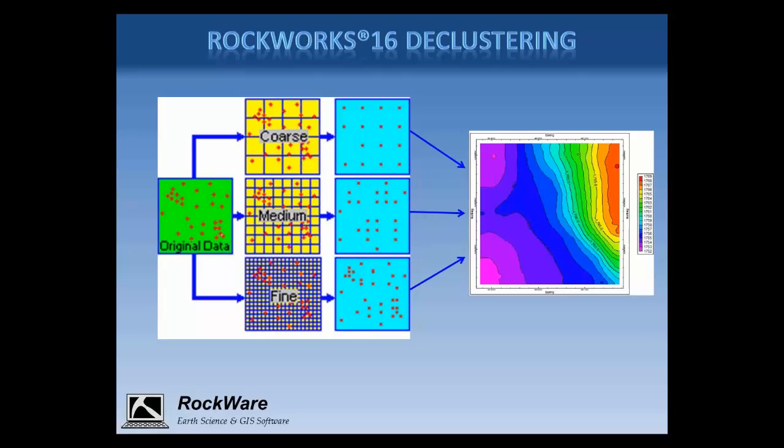The column shaded with a turquoise background represents the averaged values based on the declustering grids, with a red control point in the center of each grid cell. These points are passed on to the modeling algorithm to create the Rockworks grid. If you have a very densely spaced data set — for example, LiDAR data — turning on declustering can drastically speed up the modeling process. It also comes in handy for 3D models based on densely spaced borehole data such as borehole geophysics. Models created with and without declustering are typically very similar, so if you're working with a large data set, it's almost always a good idea to turn on declustering.